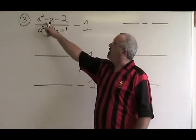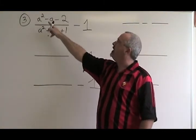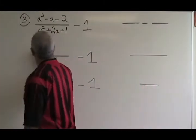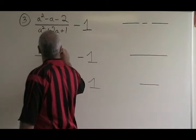This is a simple trinomial. What two numbers multiply to give negative 2 and add to give negative 1? They are negative 2 and 1. So we have a minus 2, a plus 1.